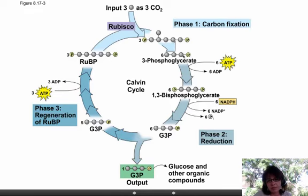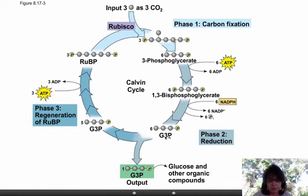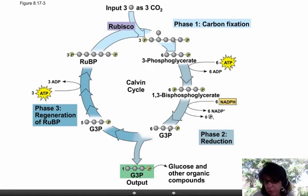Rearrangements take place. ATP comes in, gives its energy off, and now we have a bisphosphate item. NADPH, an energy carrier, comes in and helps rearrange bonds. We now have the molecule G3P — glyceraldehyde 3-phosphate — which is the molecule we saw halfway through glycolysis. So if this is halfway through glycolysis, basically if you paste two of these together you get a glucose, and that's essentially what continues to happen in the chloroplast.